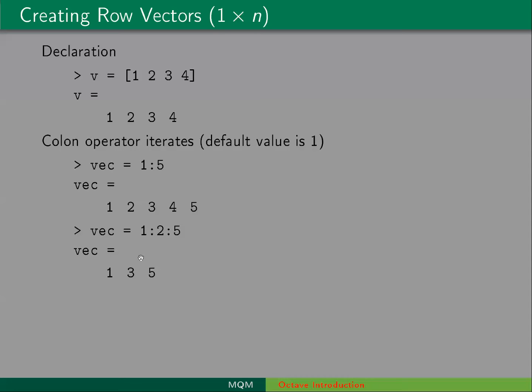We can change the iterator value just by inserting a third argument in between the two limits. So that 1 colon 2 colon 5 gives you a vector of numbers from 1 to 5 with a difference of 2 between each element. So 1, 3, 5 would be the answer for the result.